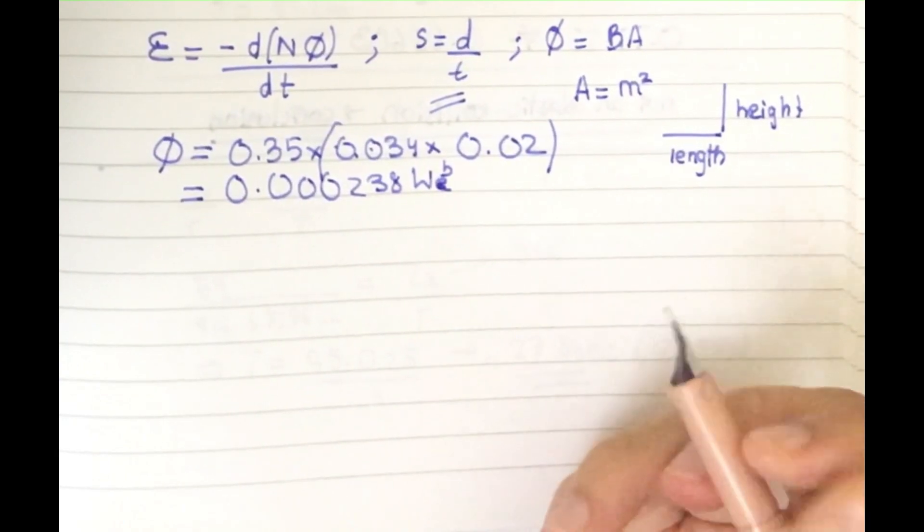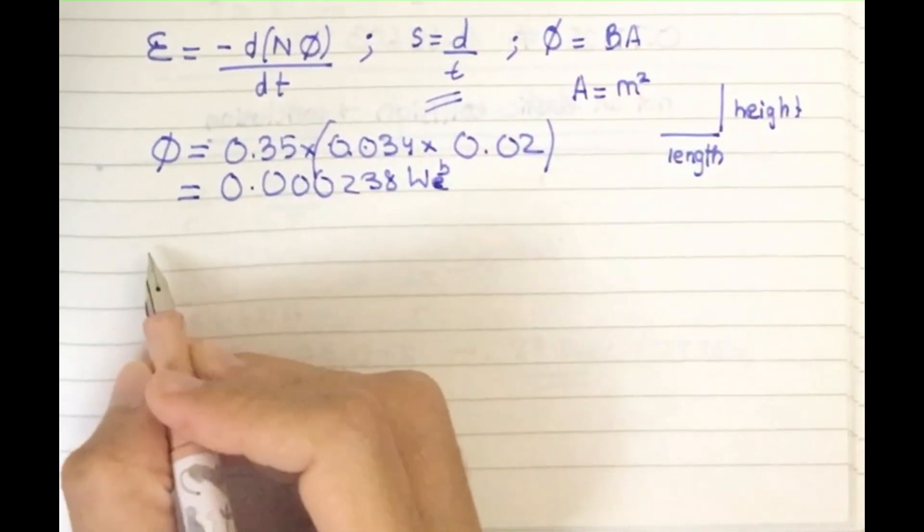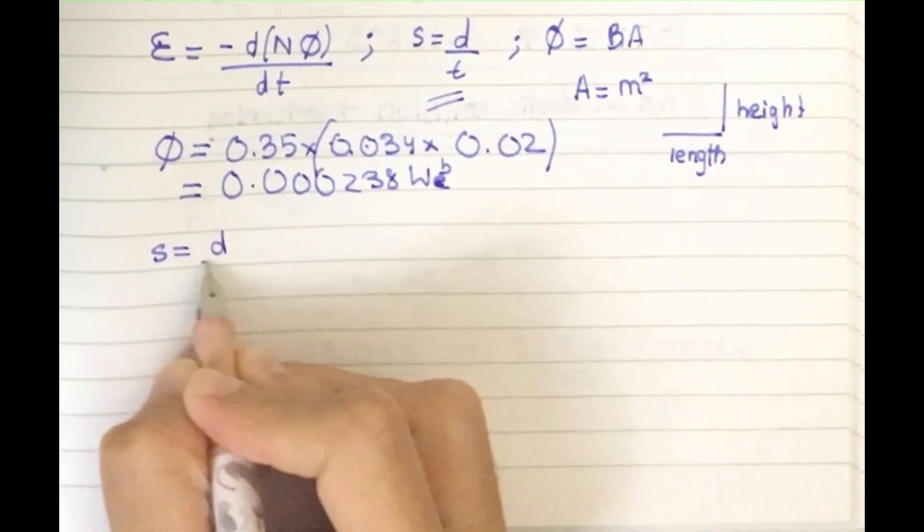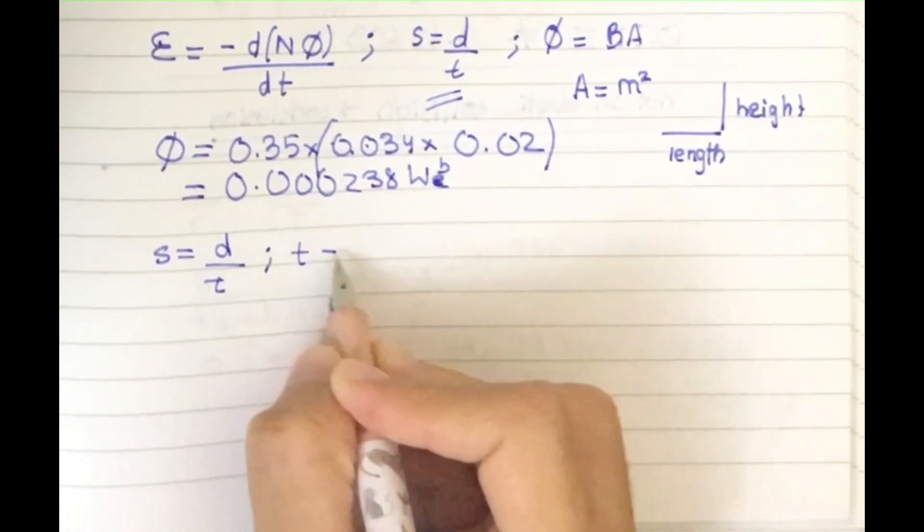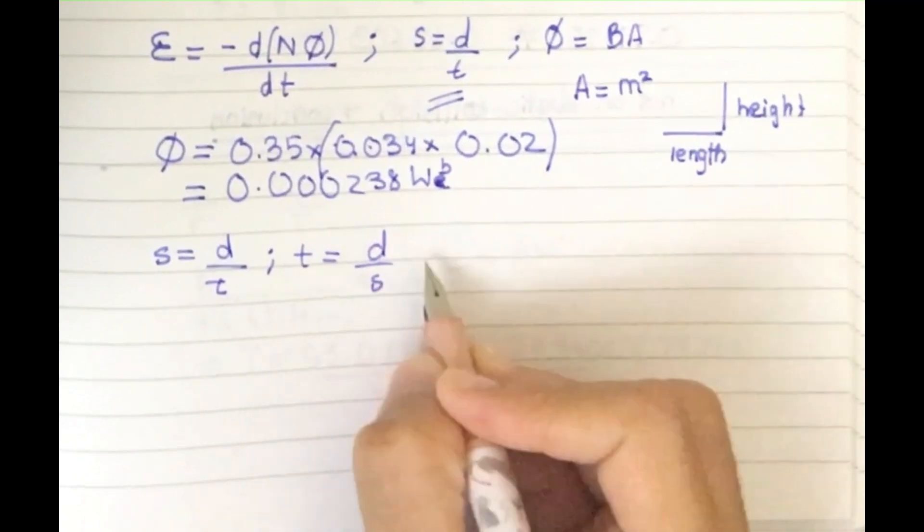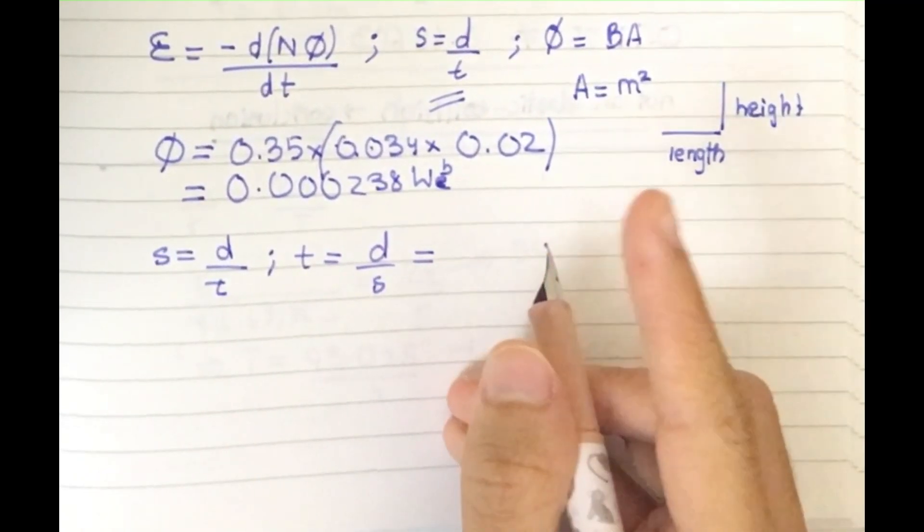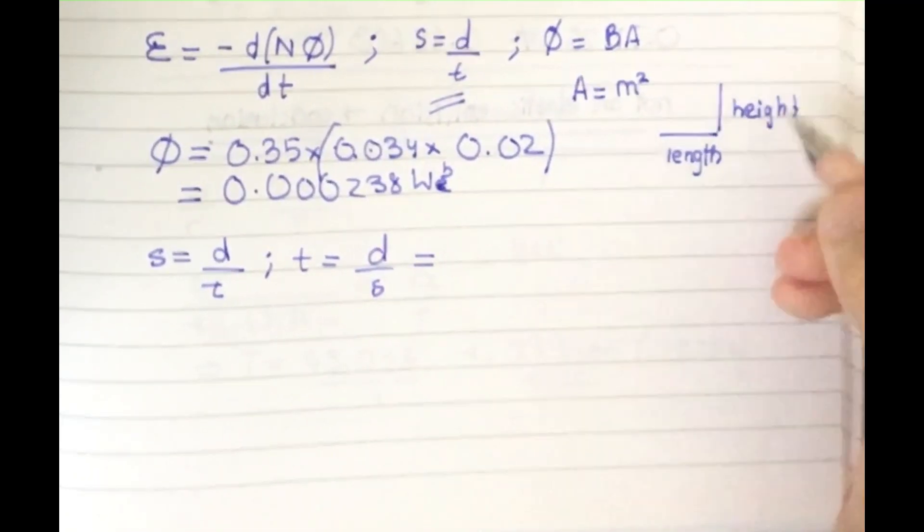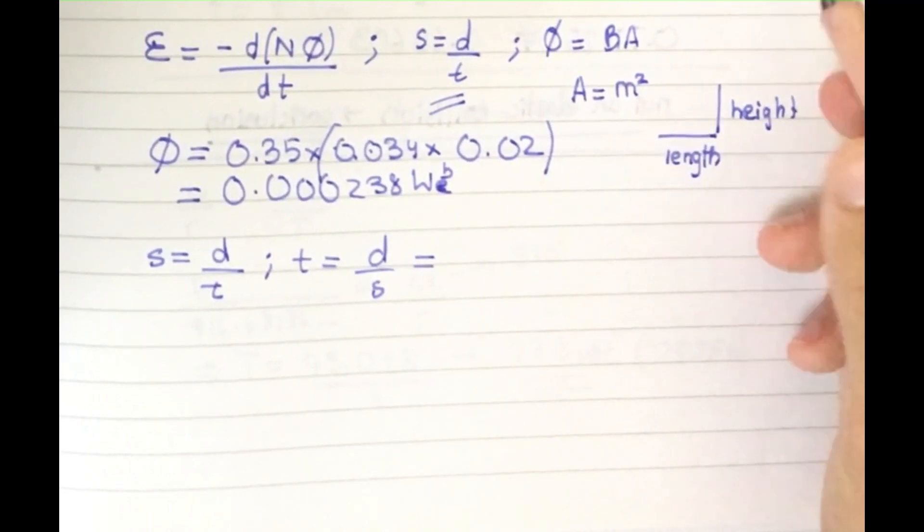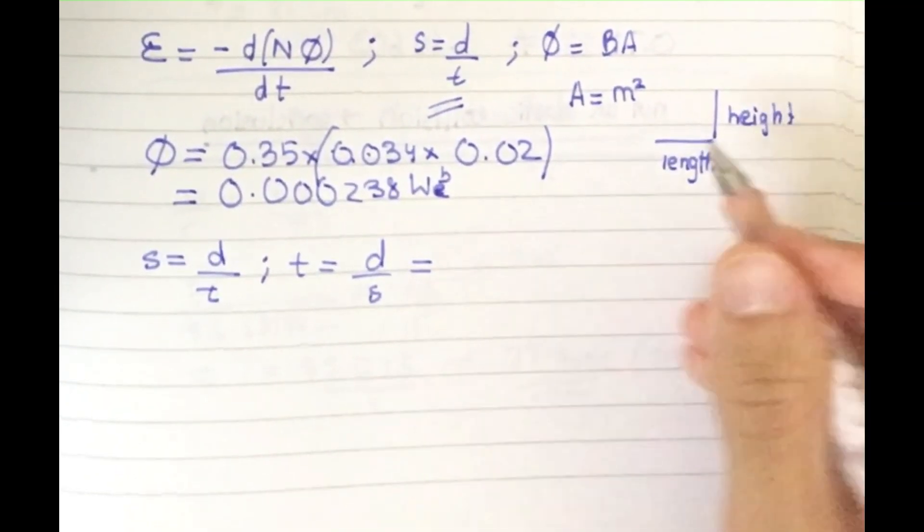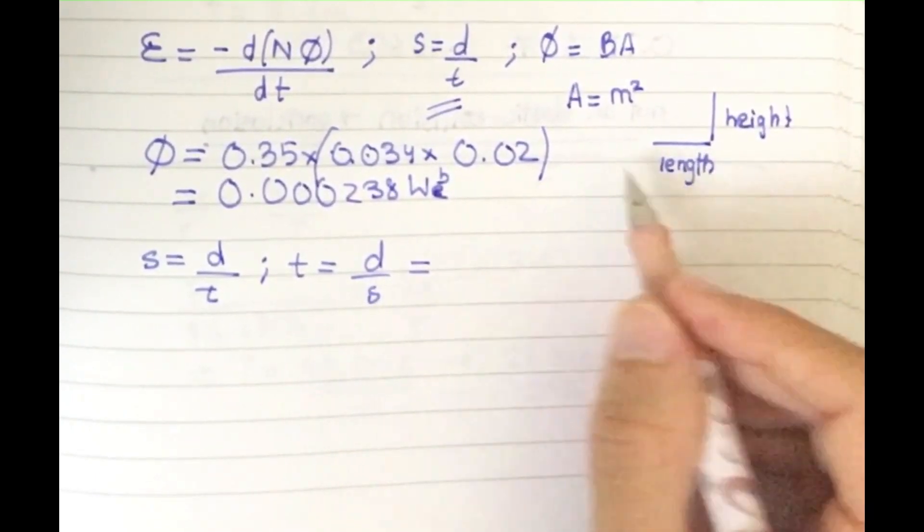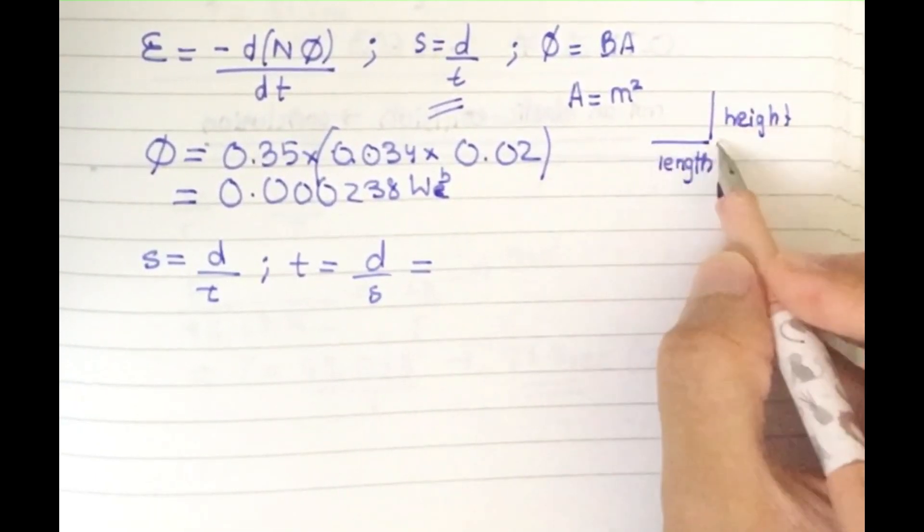Now I have to find time. I have s equals d/t, so t equals d/s. I've been given the vertical distance. It's going vertically downwards, so I have to use the height, not the length. Length is basically this, not the height.